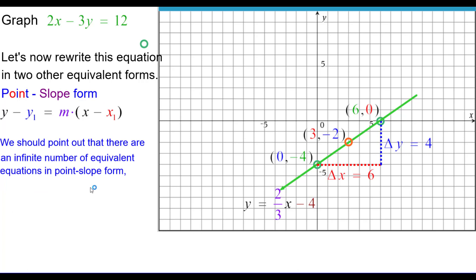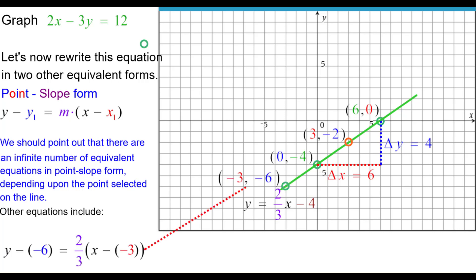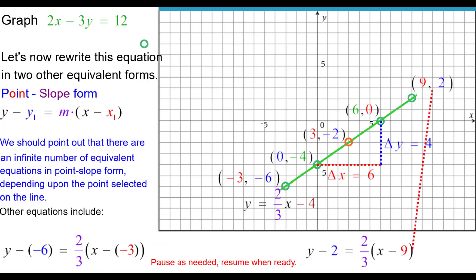We should point out that there are an infinite number of equivalent equations in point-slope form, because there are an infinite number of points along the line. It depends upon the point selected for what equation we get. For example, using the point (negative 3, negative 6) gives one equation, and using the point (9, 2) gives another. There are several others if you extend the line out infinitely.